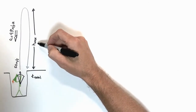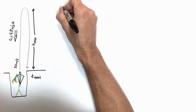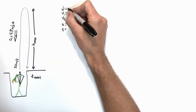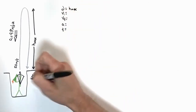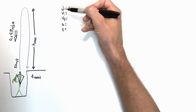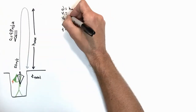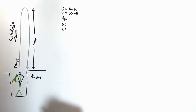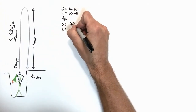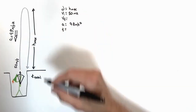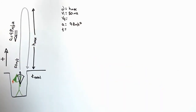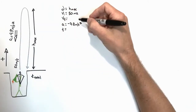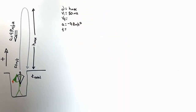First, we're going to solve for the maximum height by laying out our five kinematic variables. The displacement is simply the maximum height. The initial velocity is 50 meters per second upward. We don't know our final velocity. The acceleration is 9.8 meters per second squared, but since we say up is positive, it's negative 9.8. We see we only know two of the five kinematic variables, so there must be something we're missing — and the answer lies in the graphs.